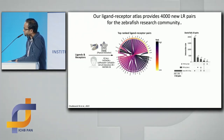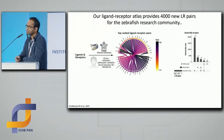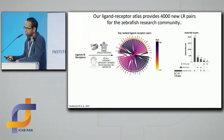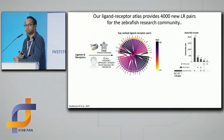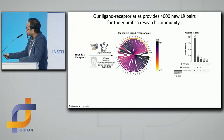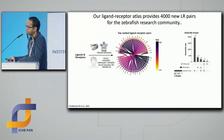Finally, there is the interactome. We use the STRING database, which has a lot of physical protein interactions and interlog protein interactions. To satisfy reviewers' needs, we also integrated all existing human ligand-receptor databases. What we now provide is 4,000 new ligand-receptor pairs that previously did not exist. Before, zebrafish researchers would only be looking at human ligand-receptor pairs, but now we say: hey, there are another 4,000 more which may be of interest to you.